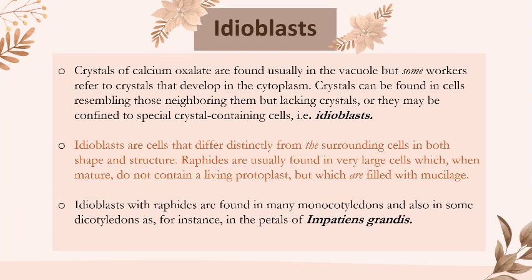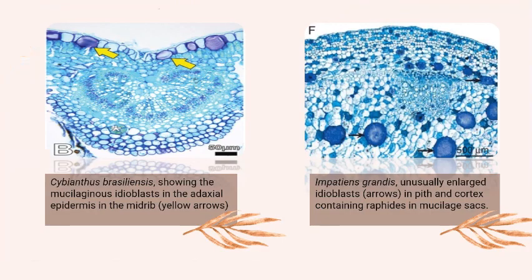Idioblasts are cells that differ distinctly from the surrounding cells in both shape and structure. Raphides are usually found in very large cells which, when mature, do not contain a living protoplast but are filled with mucilage. Here are some images showing idioblasts and raphides.